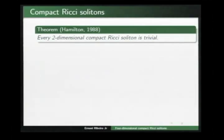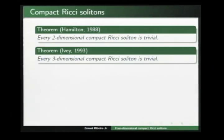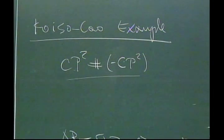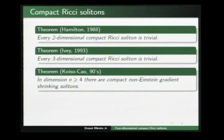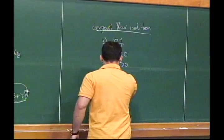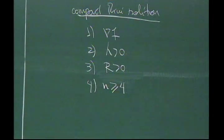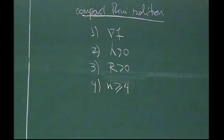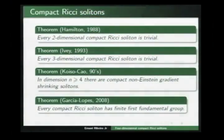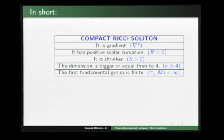Every two-dimensional compact Ricci soliton must be trivial — proved by Hamilton in 1988. In the three-dimensional case, every three-dimensional compact Ricci soliton is also trivial. Taking into account the Cao example, we conclude there exist non-trivial compact gradient Ricci solitons in dimension four. So in the compact non-trivial case, the dimension must be at least four. Additionally, Fernandes proved that every compact Ricci soliton has finite first fundamental group. Summarizing: a compact Ricci soliton must be of gradient type, have positive scalar curvature, be shrinking, have dimension ≥ 4, and have finite fundamental group.